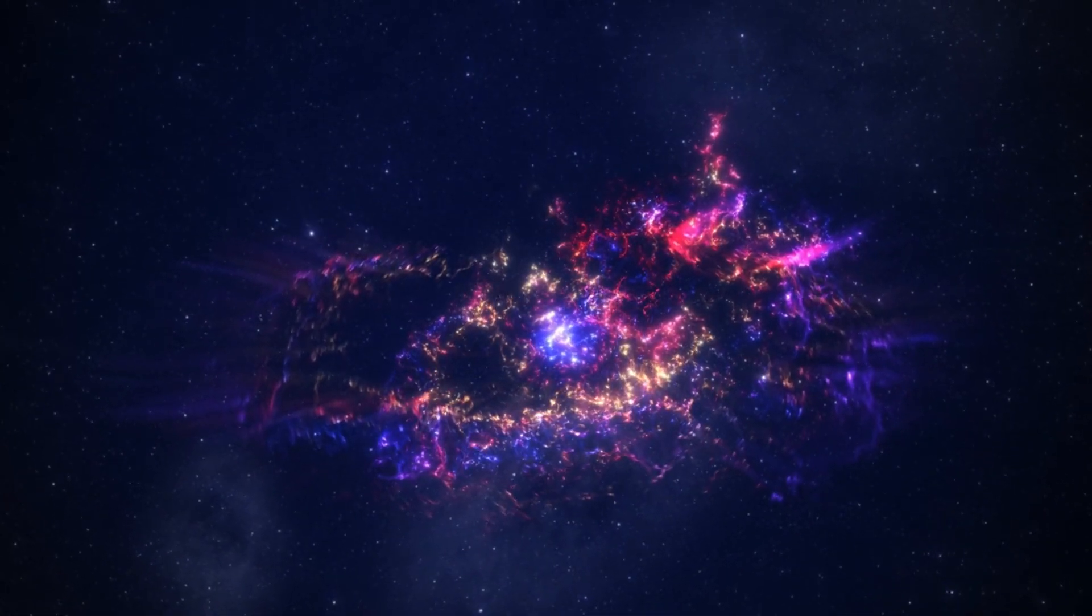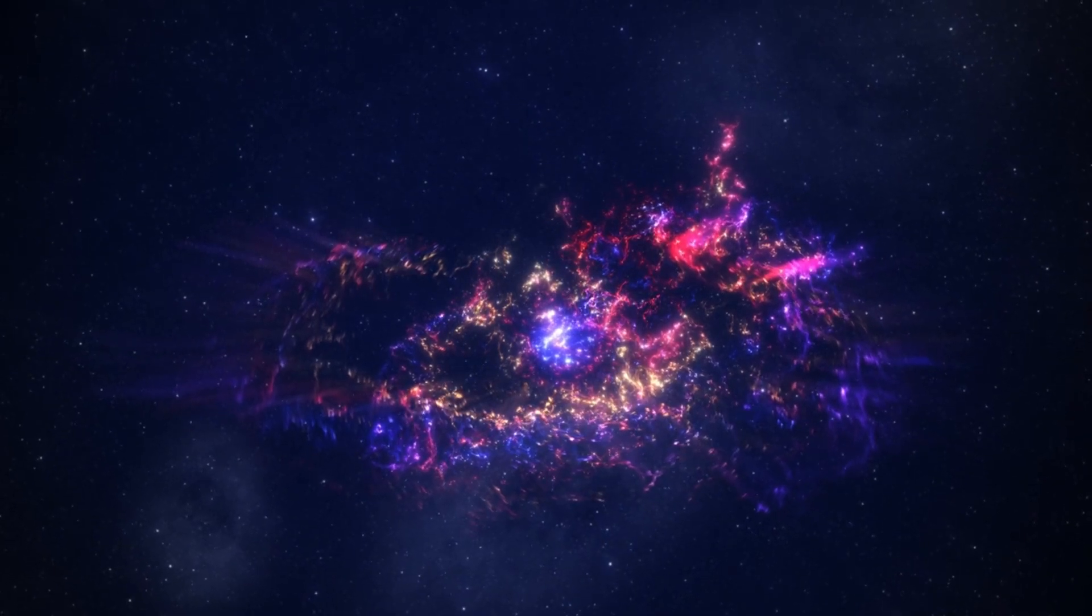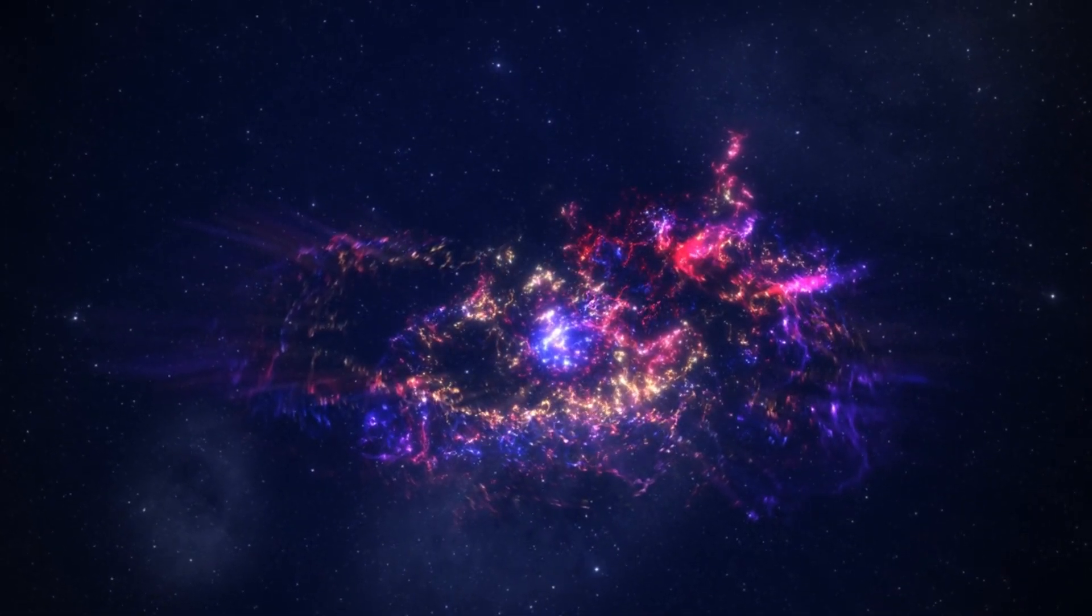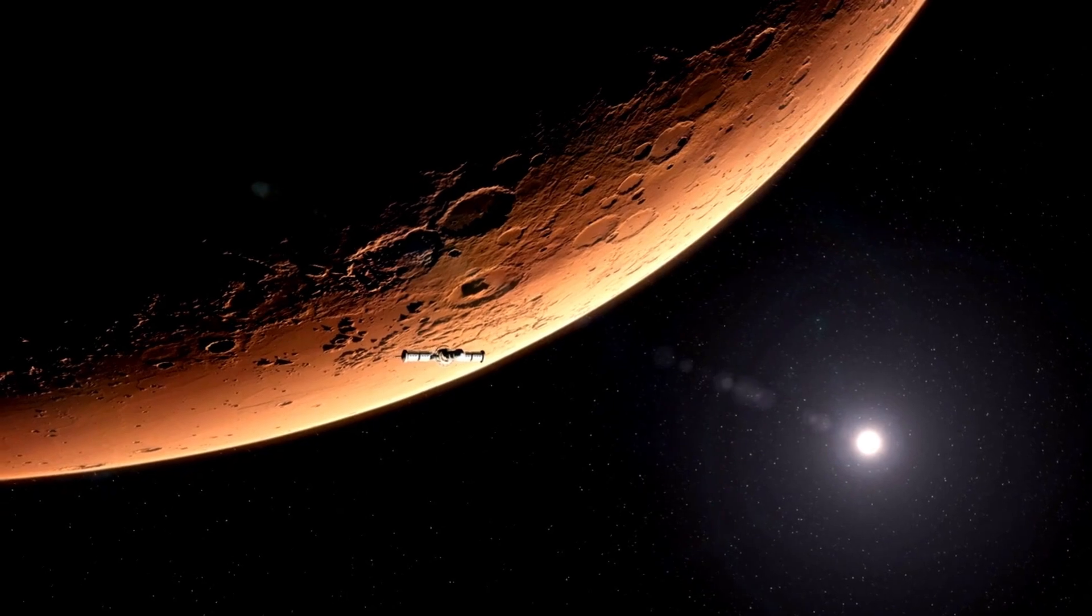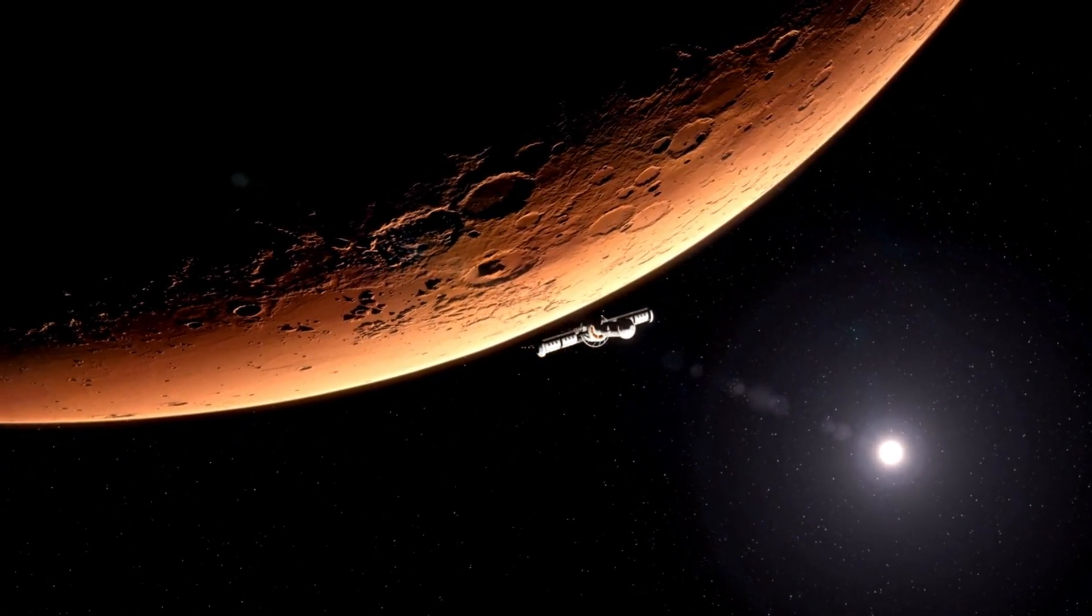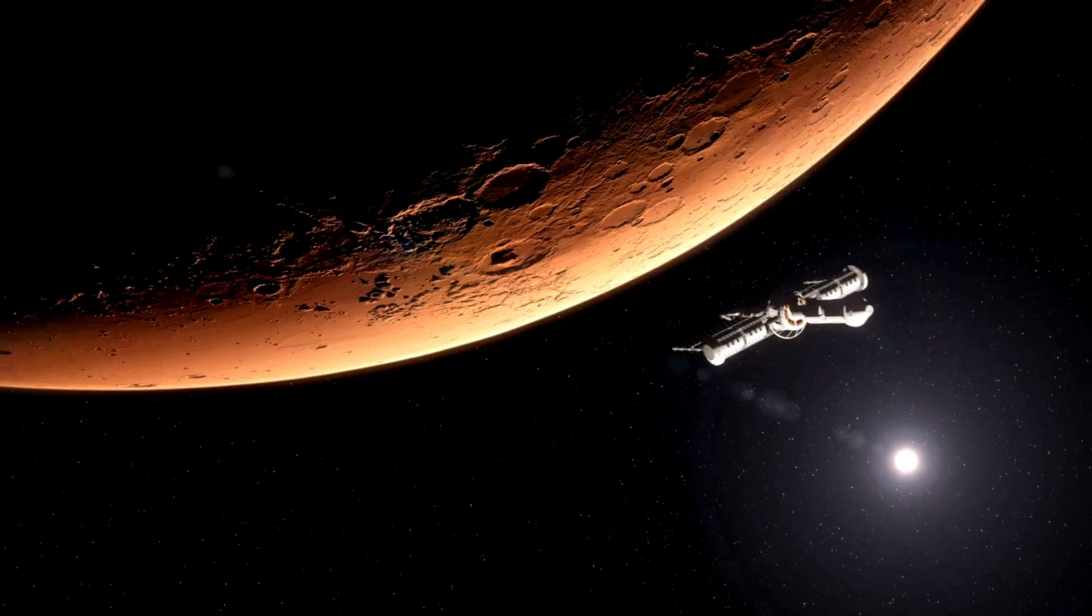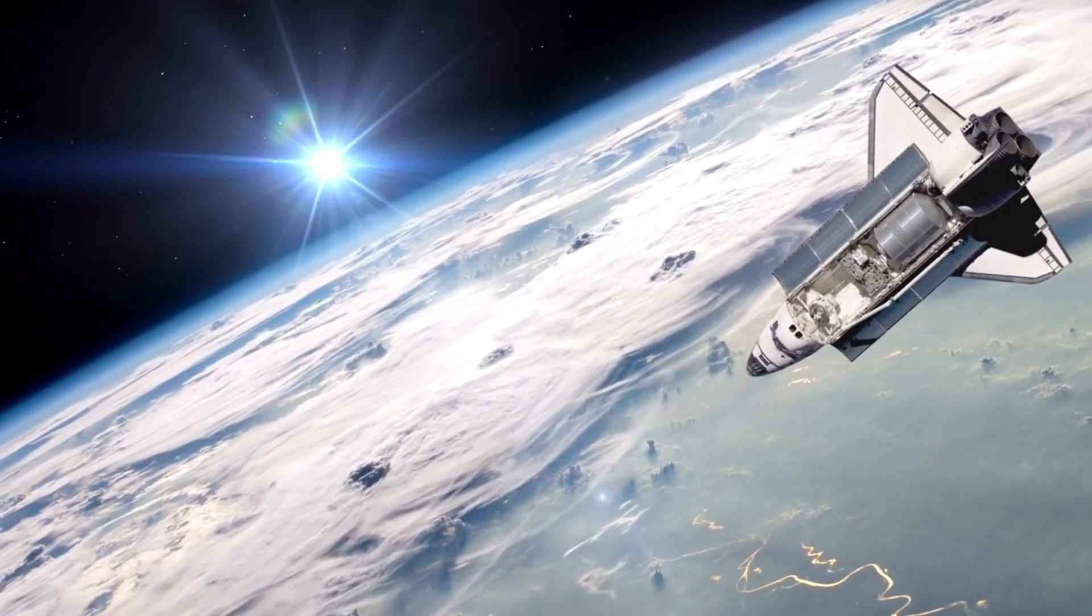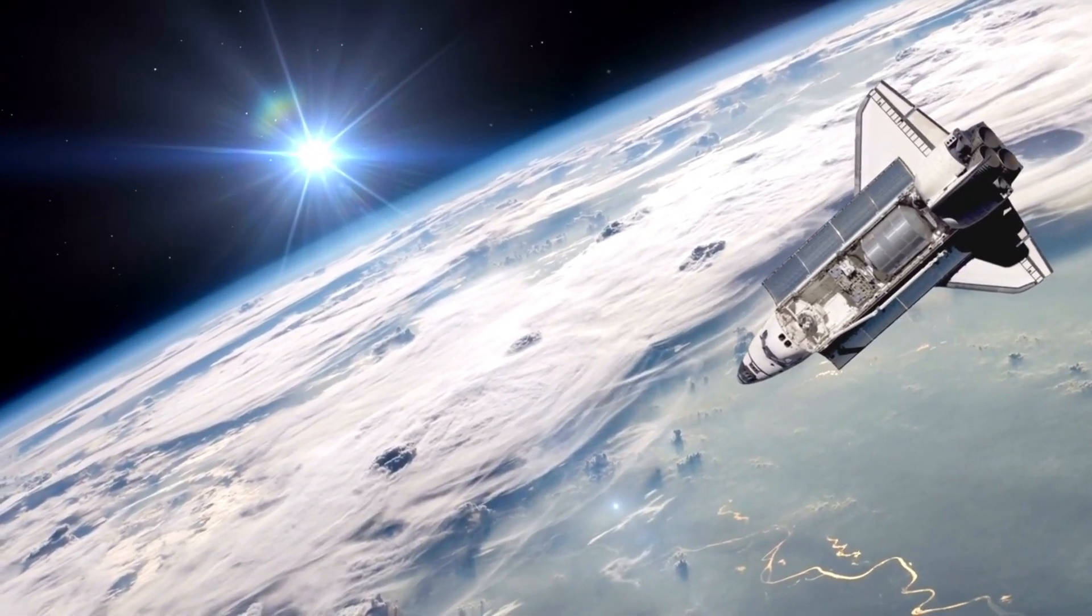Who knows what other secrets the star system holds? Perhaps there's another planet that we have yet to discover. Proxima Centauri b receives roughly the same amount of energy from its star as Earth does from the Sun. Could this truly mean that there's water on its surface, and perhaps even life?